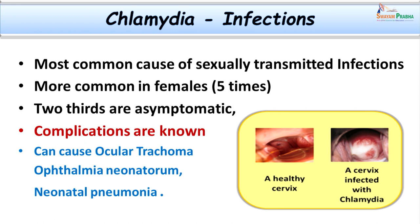Other than involvement of the pelvis and genital tract, chlamydia can also involve the eyes, causing oculotrachoma. Trachoma serovars of Chlamydia are also called TRIC agents, which mainly cause oculotrachoma and ophthalmia neonatorum in children. They may also cause neonatal pneumonias when children are born to mothers infected during pregnancy.